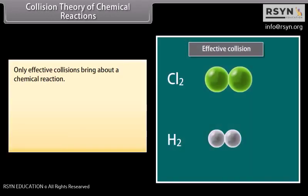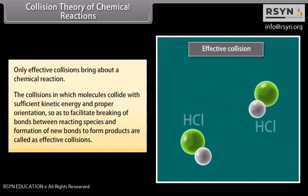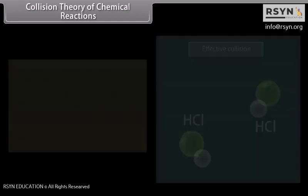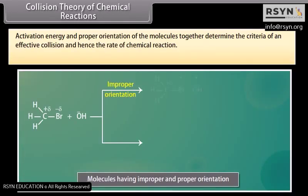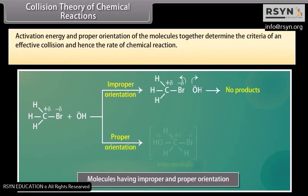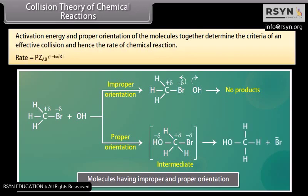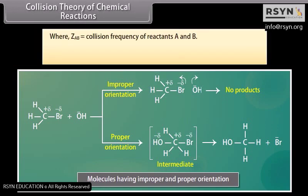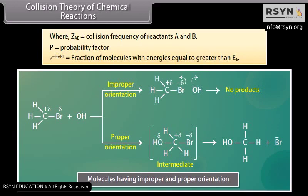Collision theory: only effective collisions bring about a chemical reaction. Collisions in which molecules collide with sufficient kinetic energy and proper orientation, so as to facilitate breaking of bonds and formation of new bonds to form products, are called effective collisions. Activation energy and proper orientation together determine the criteria of an effective collision. Rate = P × Z_AB × e^(−Ea/RT), where Z_AB is the collision frequency of reactants A and B, P is the probability factor, and e^(−Ea/RT) is the fraction of molecules with energies equal to or greater than Ea.